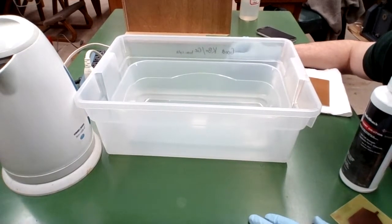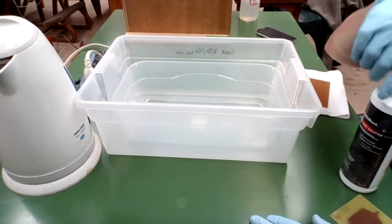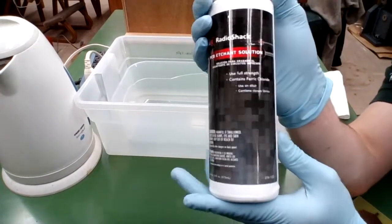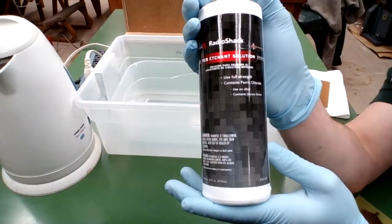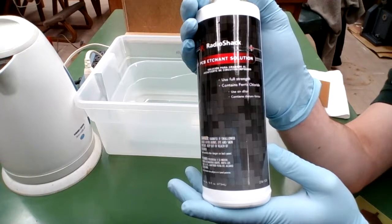All right, so now we're going to etch our circuit board. The way we're going to do that is with this PCB etchant solution from Radio Shack. This is sold at every Radio Shack in the country.